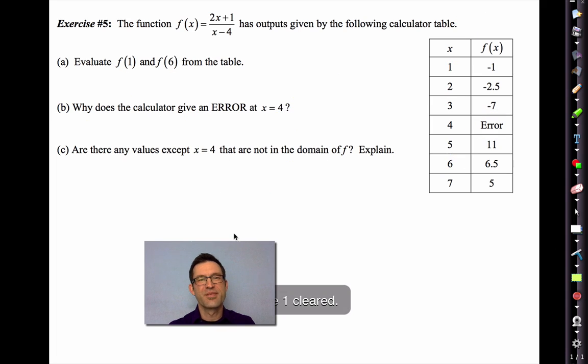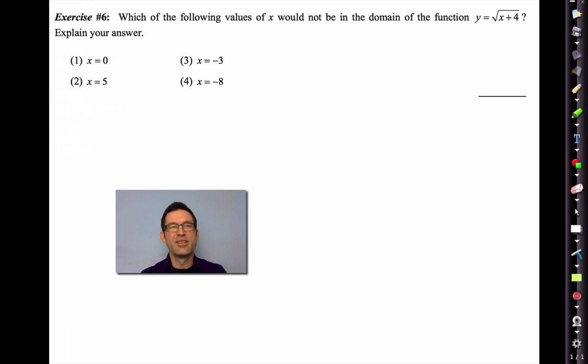Let's take a look at one involving a square root. Which of the following values of x would not be in the domain of this function? Explain your answer. Well, why in the world would we not be able to put a value of x in there? Let's try x equals 0 for a second. If I put a 0 in here, I get the square root of 4, and that's equal to 2. I was able to get an output. But one of these values of x won't work. It will not allow me to have an output. Think about which one it is.